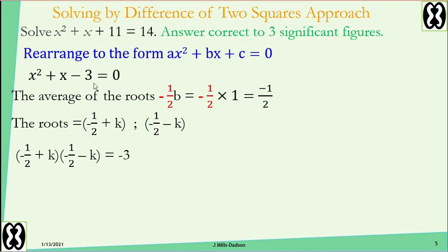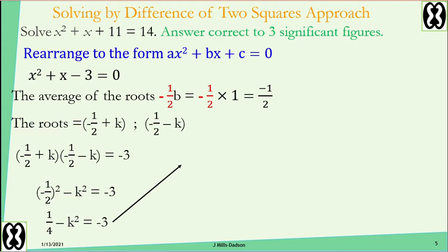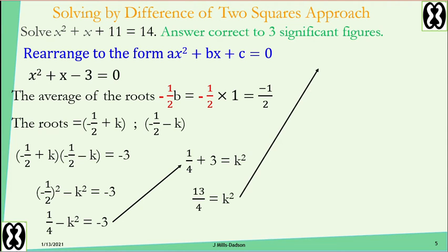Multiply the roots and set equal to the constant, which is negative 3. Use difference of two squares for the left-hand side: negative one-half all squared minus k squared equals negative 3. Negative one-half all squared is one quarter. So one quarter minus k squared equals negative 3. Add 3 to both sides and add k squared to both sides. One quarter plus 3 gives 13 over 4, so k squared equals 13 over 4. Find the square root on both sides — k is root 13 over 2.